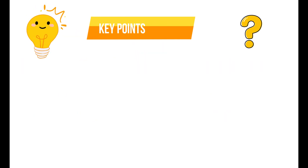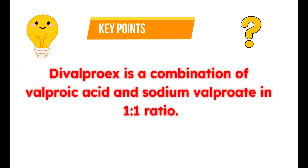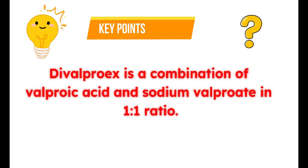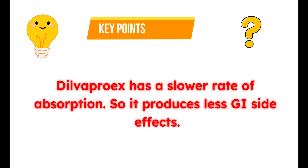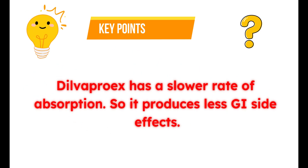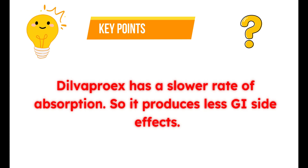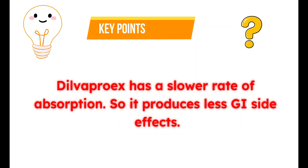What is divalproex? Divalproex is a combination of valproic acid and sodium valproate in a 1:1 ratio. What is the advantage of divalproex? This medication has a slower rate of absorption, so it produces less gastrointestinal side effects — nausea, vomiting, and abdominal pain are less pronounced with divalproex.